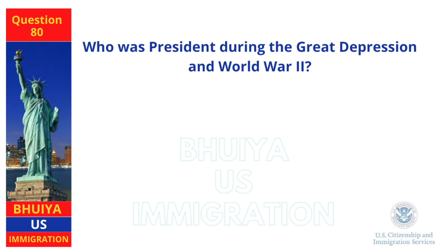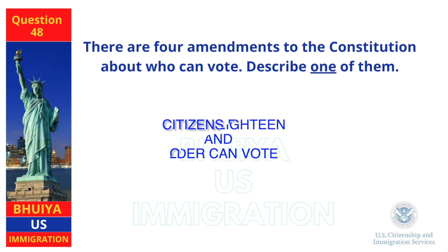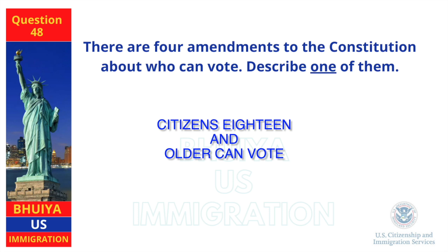There are four amendments to the Constitution about who can vote. Describe one of them. Citizens 18 and older can vote.